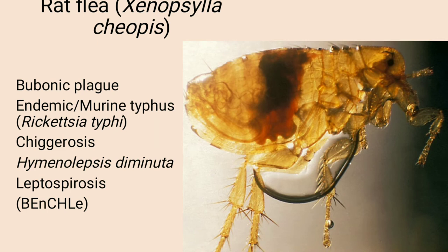Identify the insect: This is rat flea, or Xenopsylla cheopis. It transmits bubonic plague, endemic or murine typhus, chiggerosis, Hymenolepis diminuta, and leptospirosis. Mnemonic: BENCHL — B for bubonic plague, N for endemic typhus, C for chiggerosis, H for Hymenolepis diminuta, L for leptospirosis.